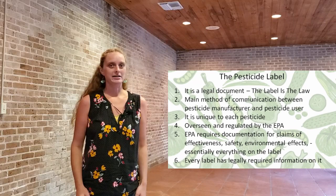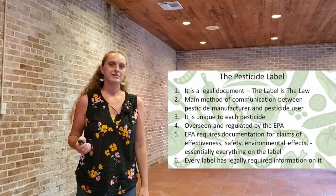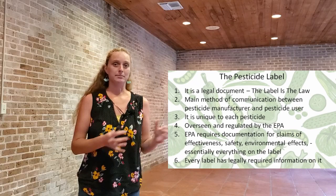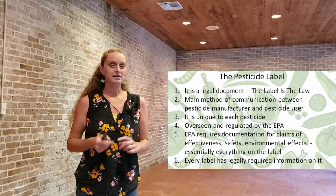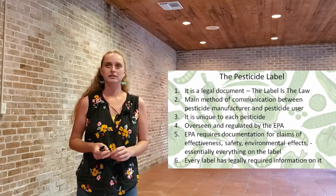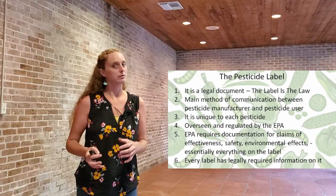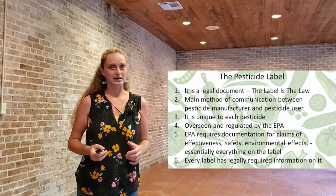Let's talk about how pesticides are labeled. Every pesticide comes with a label, and the label is actually a legal document. The label is the law — we're going to say that a few times in this lecture. Everything on that label must be followed just so. The main method of communication between the pesticide manufacturer and the pesticide user is the label. It is unique to every single pesticide and is overseen and regulated by the EPA. The EPA requires documentation for claims of effectiveness, safety, environmental effects, and essentially everything on the label before that product can go to market.